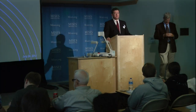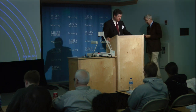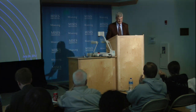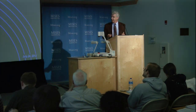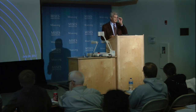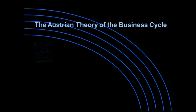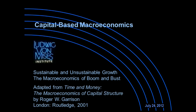Our last lecturer this afternoon is Dr. Roger Garrison, and he's going to be speaking to us about the Austrian theory of the business cycle. I used the same title that was on the program, but I like to point out that the graphical apparatus I'm going to present is actually much more broad than that. I've been calling it capital-based macroeconomics, and that term has caught on to some extent.